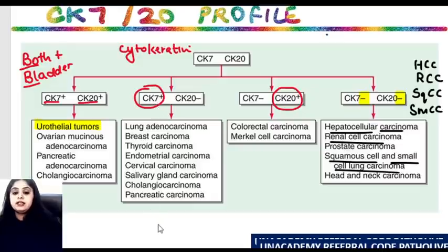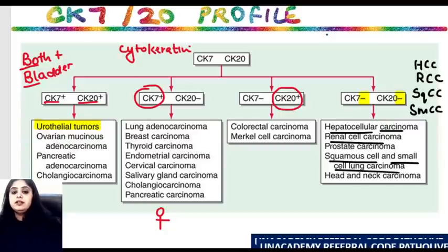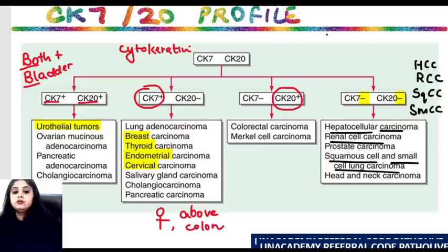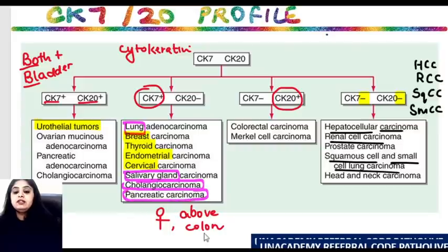Only CK7 positive is learned by two techniques. First, remember that not all but the majority of female-related tumors — breast cancer, thyroid cancer, endometrial cancer, cervical cancer — tend to be CK7 positive. Apart from that, all organs above the colorectal region — lung cancer, salivary gland, thyroid, bile duct (cholangiocarcinoma), pancreatic carcinoma — everything above the colorectal region also tends to be CK7 positive.